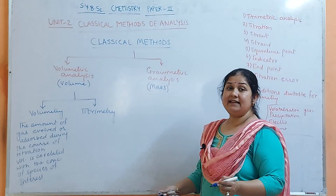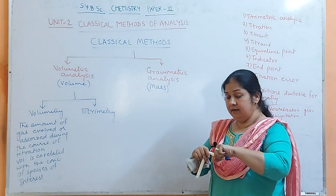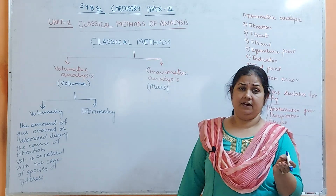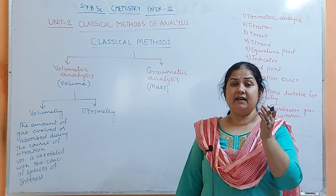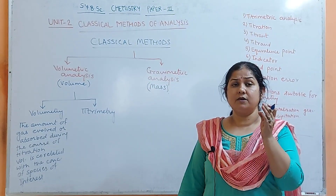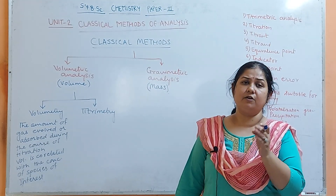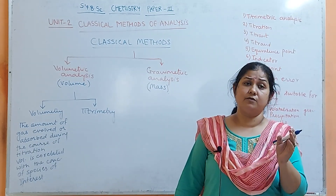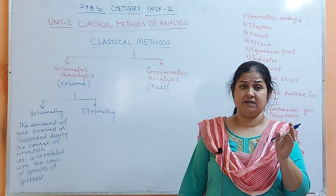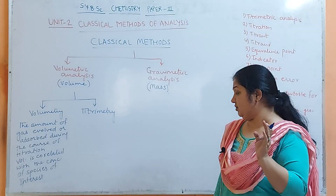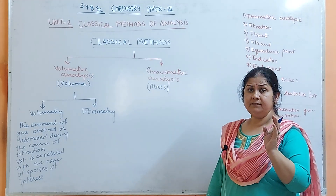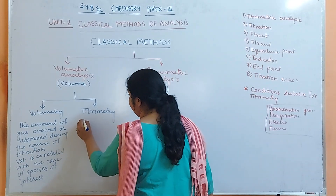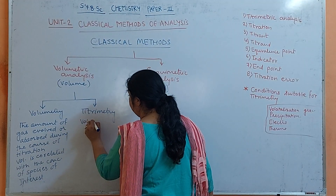In Titrimetry, a solution of known concentration of a definite volume is titrated with a definite volume of a solution of unknown concentration. Here you are simply measuring the volume of solution.